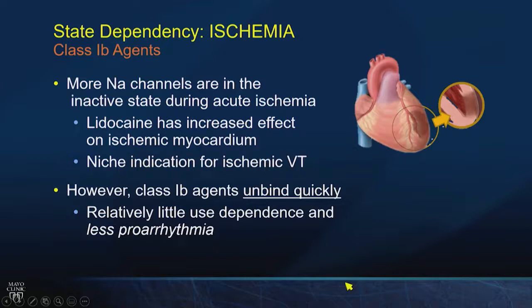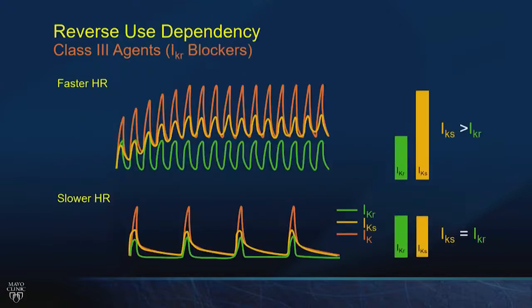Class 1B agents like lidocaine are not use-dependent but are state-dependent. In ischemic myocardium, they have more effect than in relatively normal myocardium. As a result, we use these drugs in patients with ischemic ventricular arrhythmias. They have rapid kinetics in normal myocardium, so they tend not to be terribly proarrhythmic outside of that scenario.